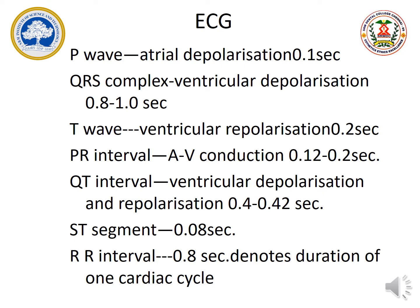Next is the PR interval. The wave starts from the P wave and ends at the R wave — we call it the PR interval. This occurs due to AV conduction, that is the atrio-ventricular conduction. Based on this conduction, the PR interval is calculated, which occurs in 0.12 to 0.2 seconds.